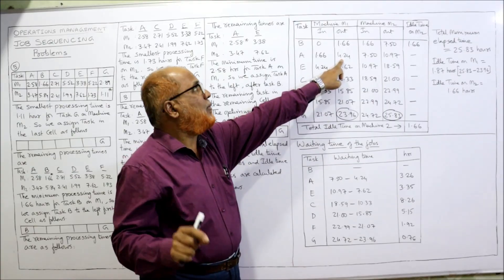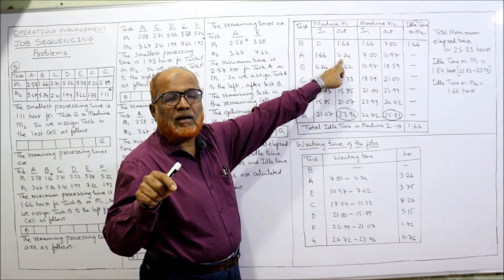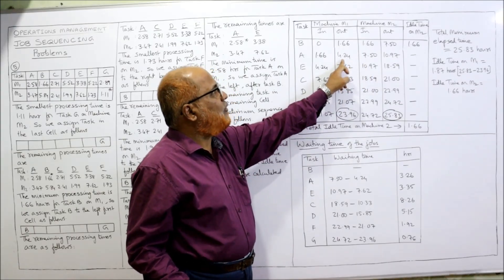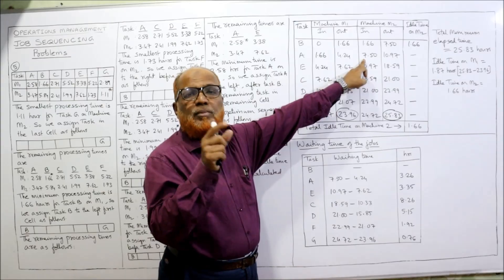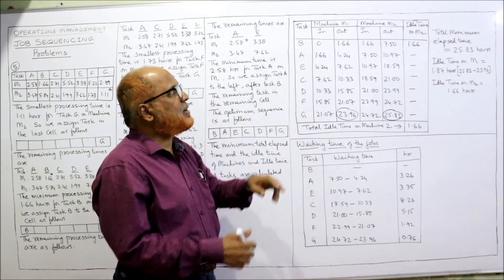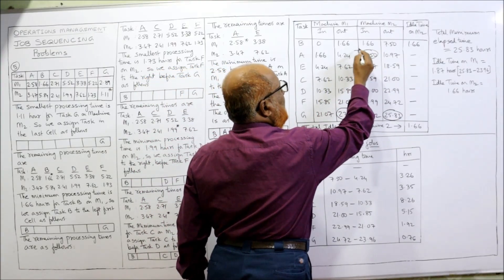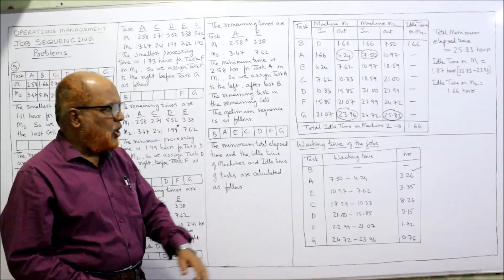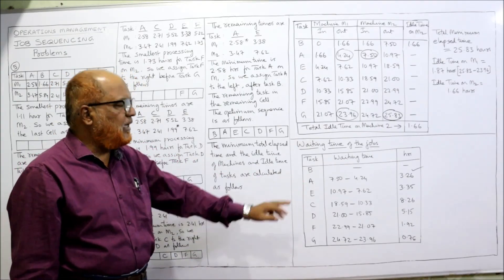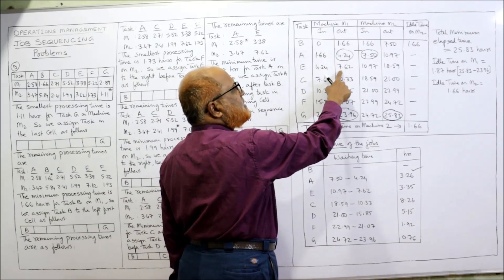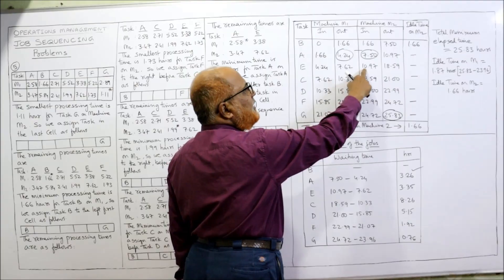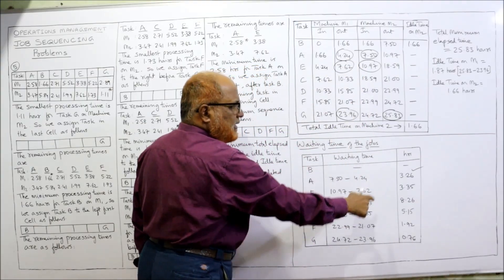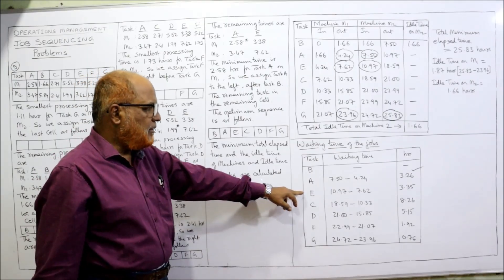Job A was finished on M1 at 4.24, but work on M2 started at 7.50. So job A is waiting from 4.24 to 7.50: waiting time = 7.50 − 4.24 = 3.26 hours. Similarly, job E was completed on M1 at 7.62, but M2 starts at 10.97: waiting time = 10.97 − 7.62 = 3.35 hours.